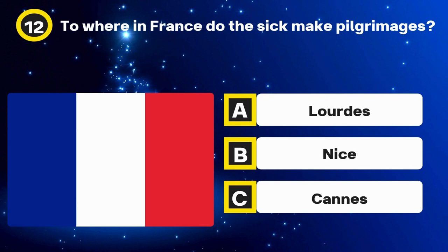Question 31. Which 1993 Disney film starred Bette Midler as a witch? Options: Bedknobs and Broomsticks, The Witches, Hocus Pocus. The answer: Hocus Pocus.